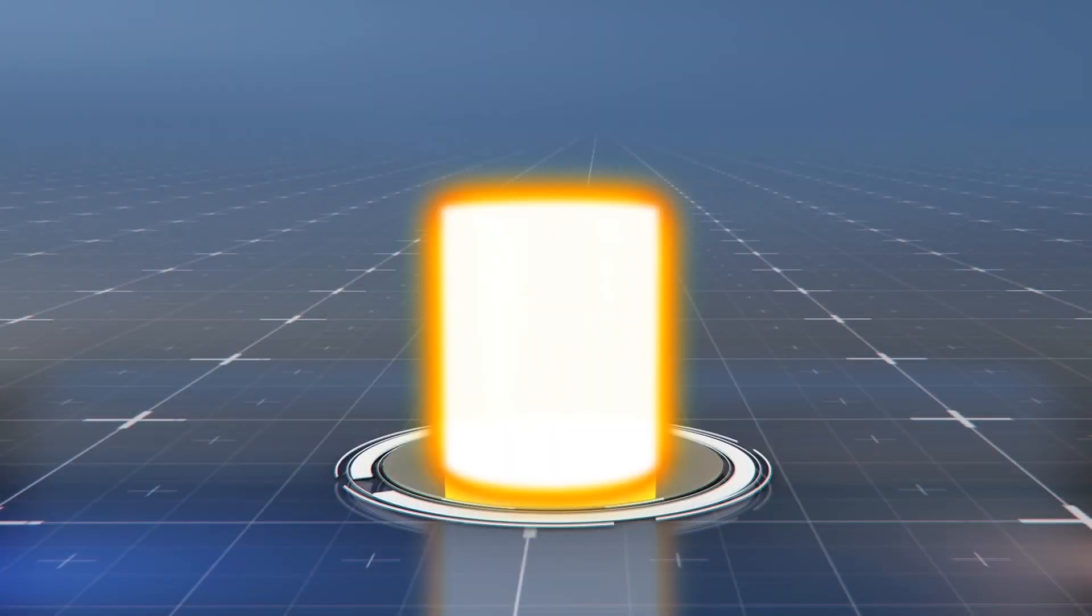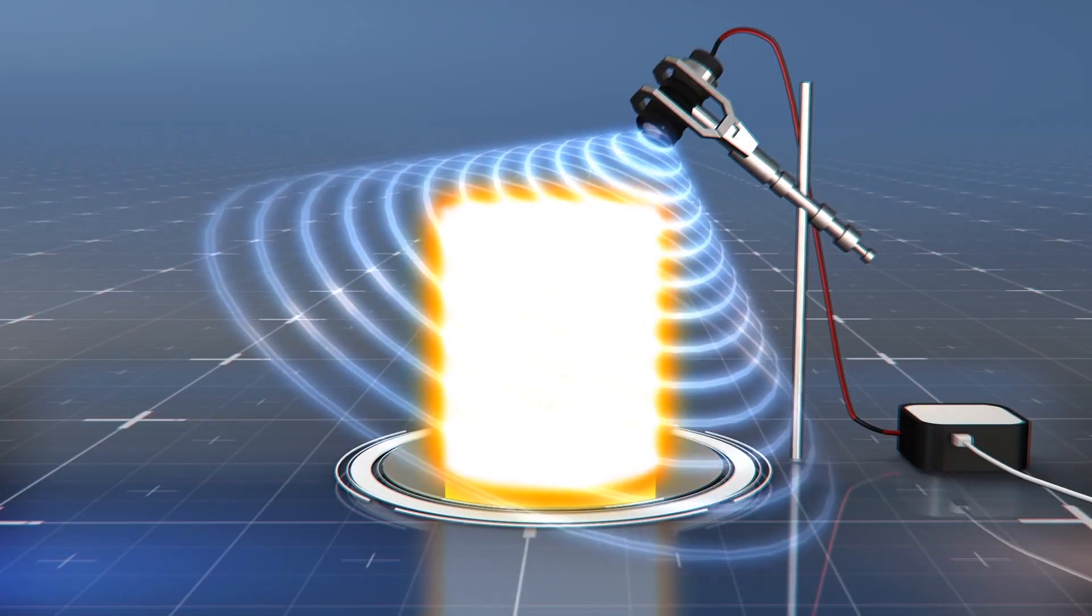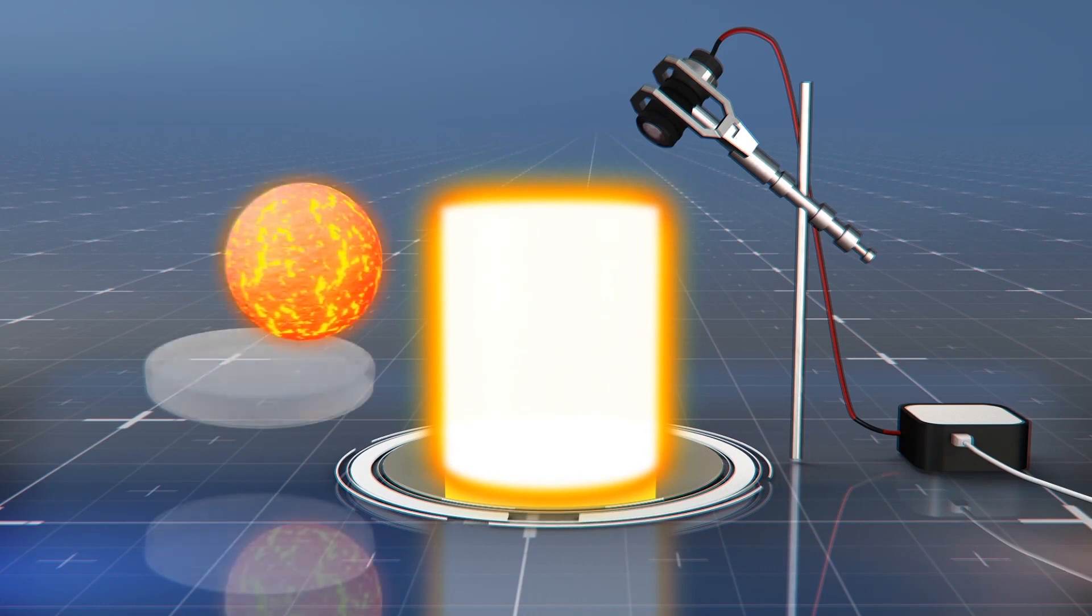The researchers melted basalt and feldspar at laboratory conditions and then took spectrometer measurements of how much light the substances gave off. The results suggest that lava accounts for only 10% of a hot super-Earth's light.